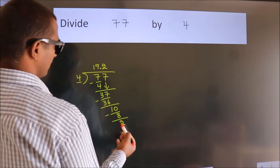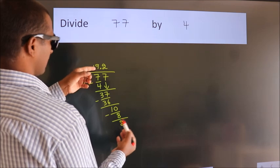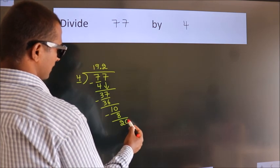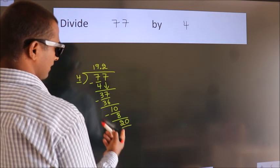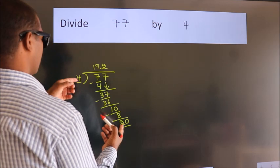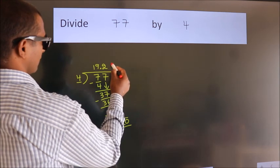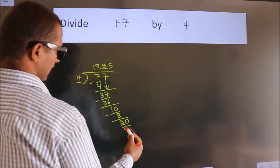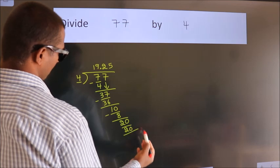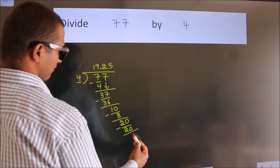After this, we already have the decimal, so directly take 0, giving us 20. When do we get 20 in the 4 table? 4 fives is 20. Now we subtract and get 0.